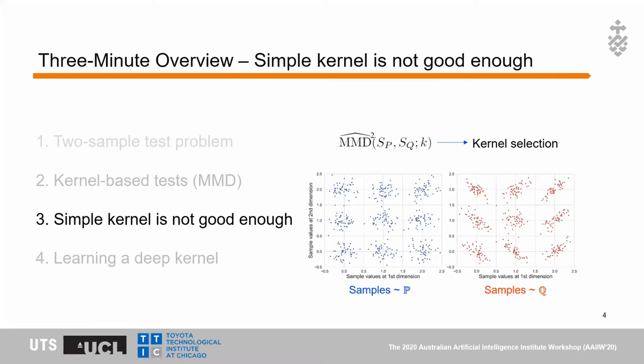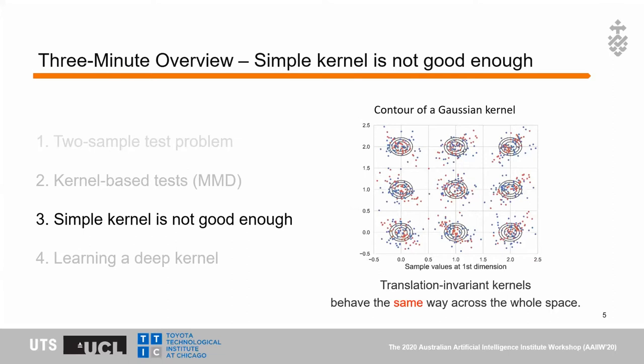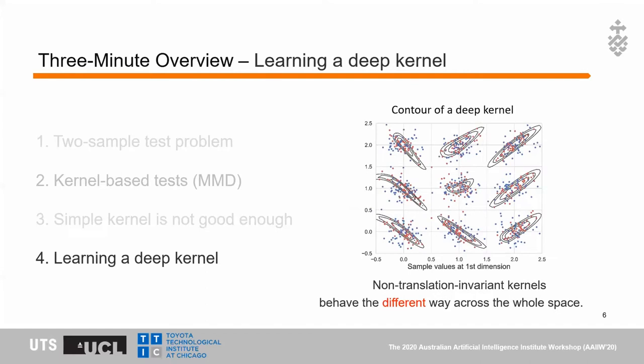If we use a Gaussian kernel to compute MMD and perform the two-sample test on the blob dataset, we can find that the contour of the Gaussian kernel shows identical circles across the space. This means that translation-invariant kernels behave the same way across the whole space. However, if we use a deep kernel, the contour can fit the data and highlight the areas that best distinguish between the two samples. Deep kernels are non-translation-invariant and behave differently across the whole space.